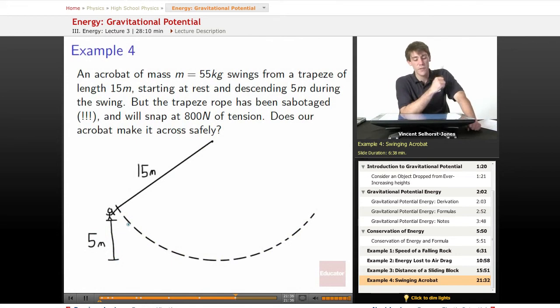An acrobat of mass m equals 55 kilograms swings from a trapeze of length 15 meters, starting at rest and descending 5 meters during the swing. But the trapeze rope has been sabotaged, and it will snap at 800 newtons of tension. Will our acrobat make it across safely? This is a question that is important for his life.